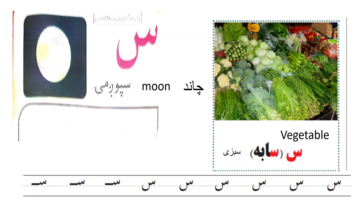Sin. Sin — shpogme. Sin — sabah. Shpogme means moon in English, and in Urdu it means chand. Sabah means sabzi in Urdu, and in English it means vegetables. We write Sin like this.